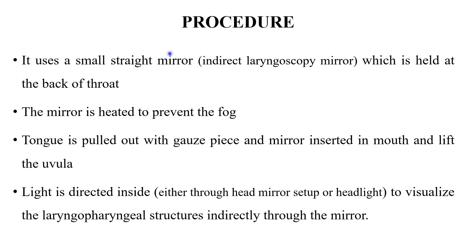For the procedure, the steps are: a small straight indirect laryngoscopy mirror is held at the back of the throat. The mirror is heated to prevent fogging. The tongue is pulled out with the gauze piece and the mirror is inserted in the mouth facing downwards, lifting the uvula up. Light is directed inside either through the head mirror setup or the headlight. Nowadays, the headlight is preferred to visualize the laryngopharyngeal structures indirectly through the mirror.